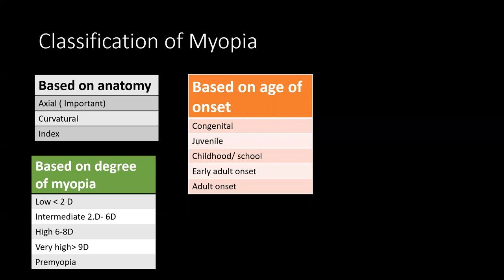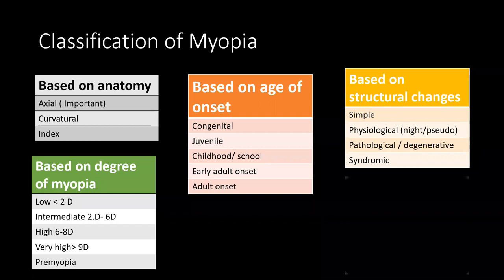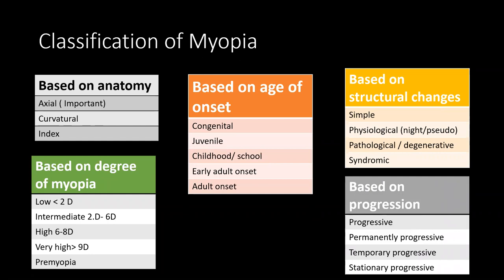Based on age of onset: congenital, juvenile, childhood, school, early adult, and adult onset. Based on structural changes: simple, physiological (includes night myopia or pseudomyopia from accommodative spasm), pathological or degenerative, and syndromic. The most common syndrome associated with myopia is Down syndrome. Based on progression: progressive, temporarily progressive, and stationary.